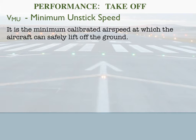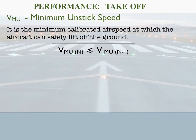Next is VMU, the minimum unstick speed. It is the minimum calibrated airspeed at which the aircraft can safely lift off the ground. In aircraft with a long body, if you rotate the aircraft below the minimum value, the attitude required is so high that there is always a danger of touching the tail. Therefore each aircraft type will have a minimum unstick speed defined to avoid any tail touch, especially when the aircraft flap points are very low. The minimum unstick speed with both engines is always less than or equal to minimum unstick speed with one engine.